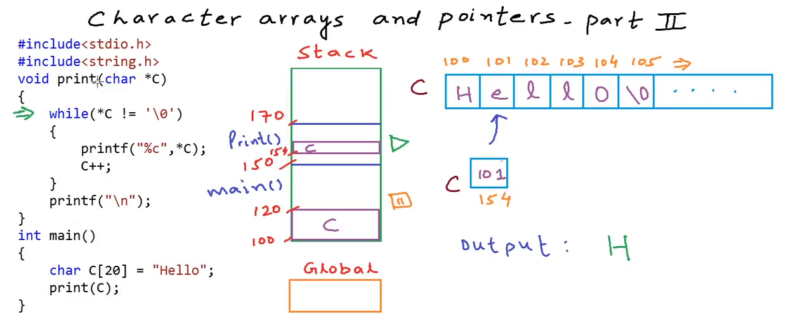And once again, we come to verifying this condition in the while loop. Asterisk C is E here, it's not null. Now once again, we will go inside the loop and print E, and we will keep on going like this until the address in this pointer variable reaches 105. Now here, the value at this particular address is null character, so the loop will not execute.